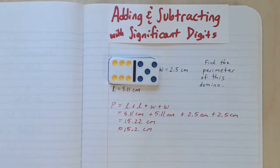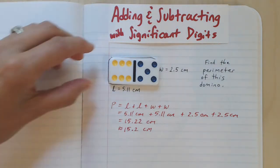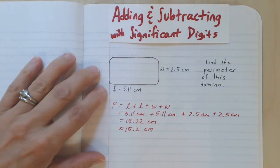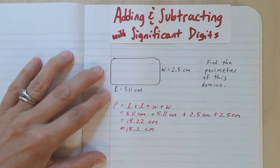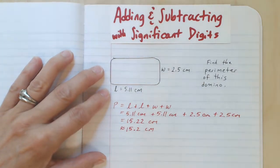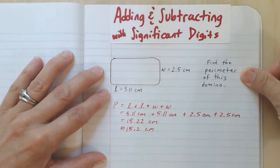So in the case of this domino, let's say someone's taken a vernier caliper and measured its length and width very carefully, and this is the accuracy of their measurements. The length is found to be 5.11 centimeters and the width is found to be 2.5 centimeters and we're asked to find the perimeter of this domino.